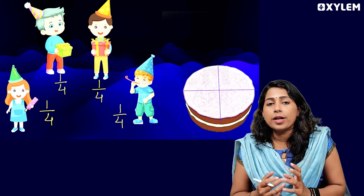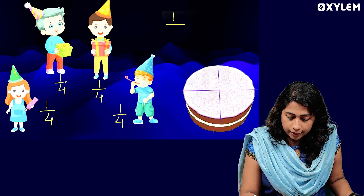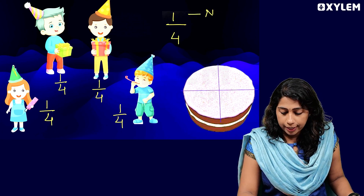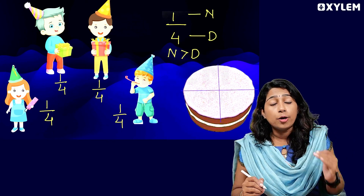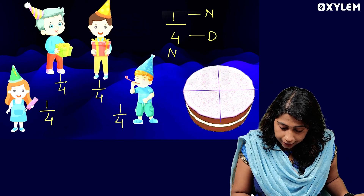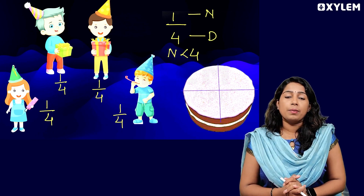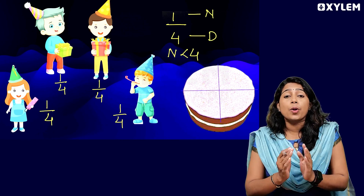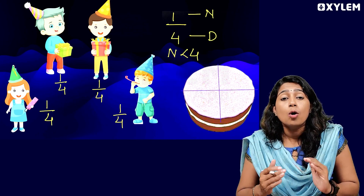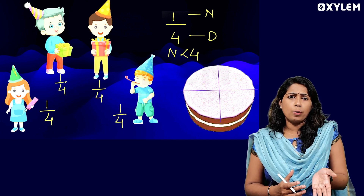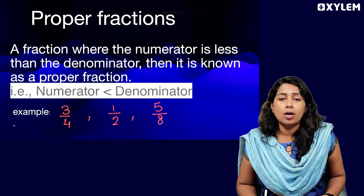That is 1 by 4. So 1 by 4 is a fraction. There is a numerator and a denominator. The numerator is 1 and the denominator is 4. Here, the numerator is less than the denominator. So it is called a proper fraction.